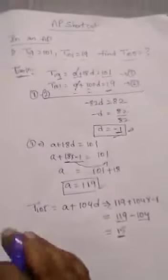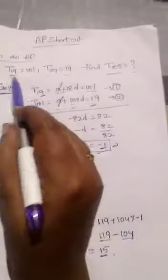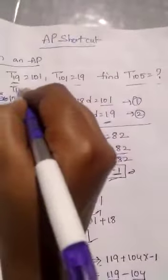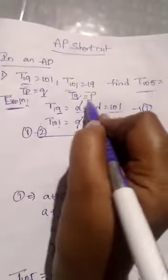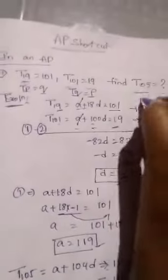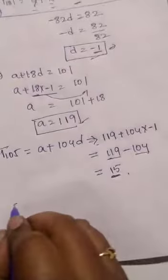So here shortcut is, this is like TP. TP equal to Q and TQ equal to P. Here TP equal to Q and TQ equal to P. So this is TR. So in this case we use shortcut.